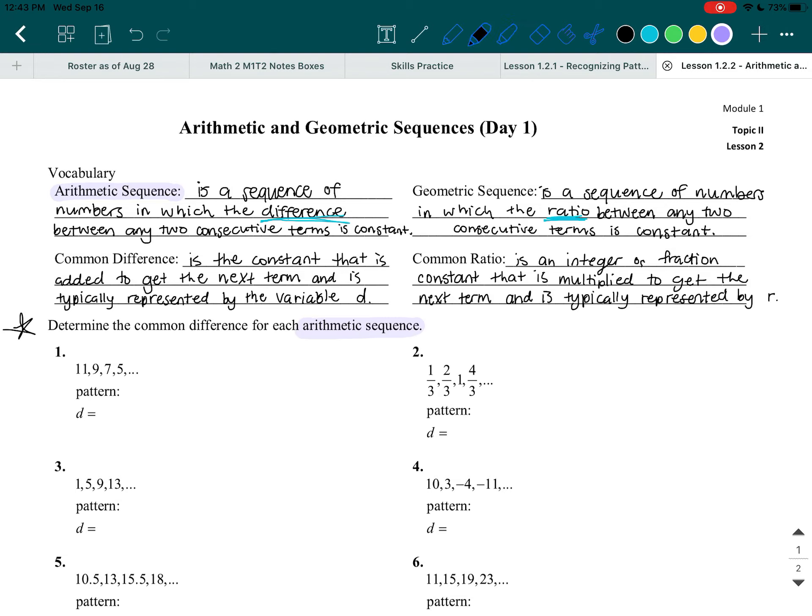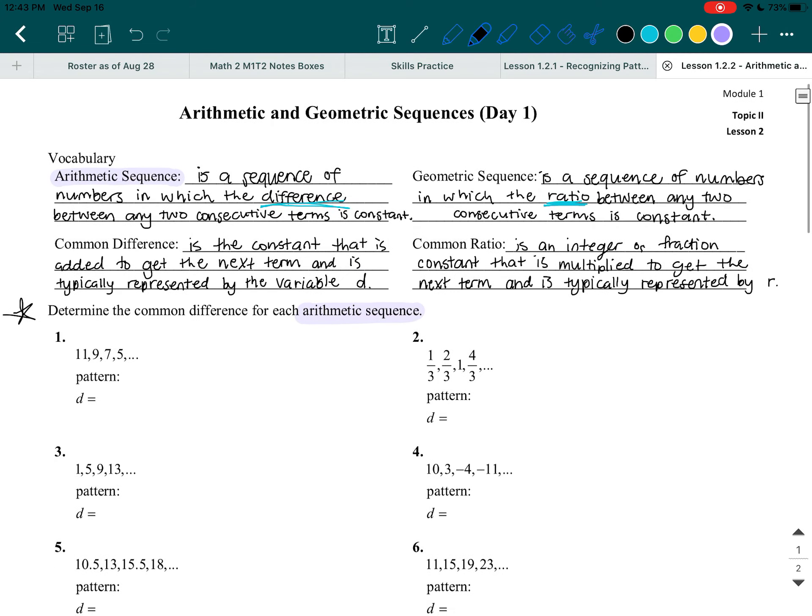And so let's take a look at our first pattern, our first set of numbers. We have 11, we have 9, 7, 5, and it keeps going. So the pattern over here is that we are taking away 2 to get from 11 to 9, and taking away 2 to get from 9 to 7, and taking away 2 to get from 7 to 5. So subtract 2 each time.